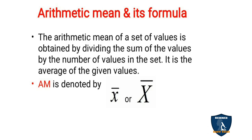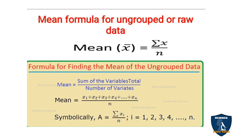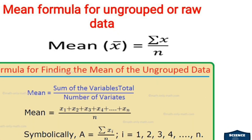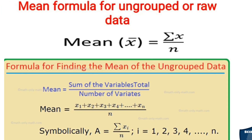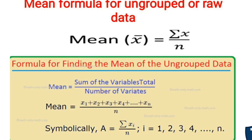It is the average of the given values. To determine arithmetic mean, you add all the values given in the data and divide by the total number of values in the data set. Arithmetic mean is denoted by AM or x̄ — either small x bar or capital X bar. The formula for arithmetic mean of ungrouped or raw data is: mean = x̄ = Σx ÷ n, where Σx is the summation of all values and n is the total number of values.